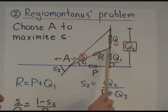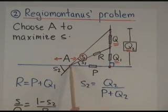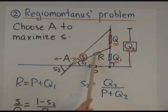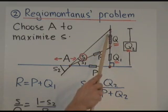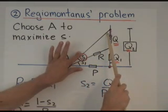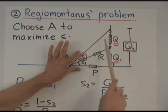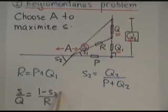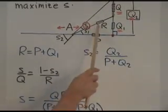Now, let's have a look at this triangle here. S over Q, by the spread law, is this spread divided by R. What is this spread? Well, if that's S2, that's a right triangle, so that's got to be 1 minus S2. So, S over Q equals 1 minus S2 divided by R.